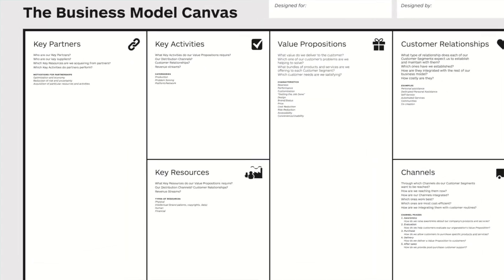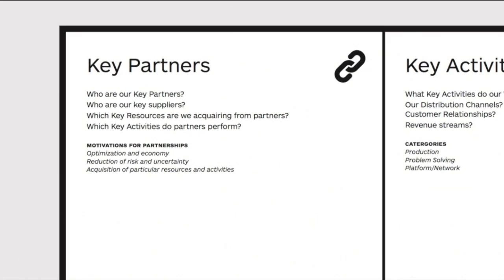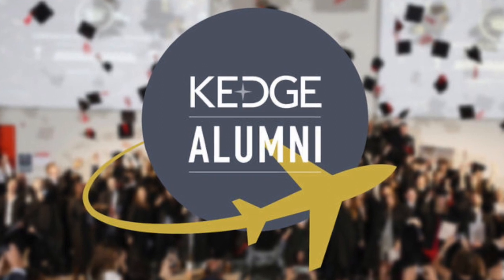The next stage to focus on is key partners. Key partners in this case could be societies that you might join, other organizations, your university alumni network, or career services that might be helping you with CV checking or introduction to companies. All these key partners are really important for you to focus on in your communications.